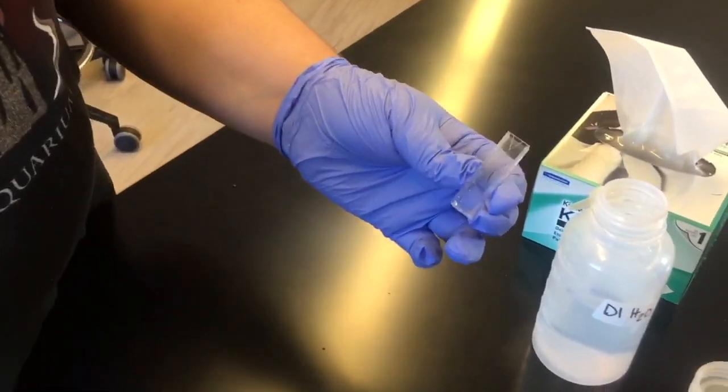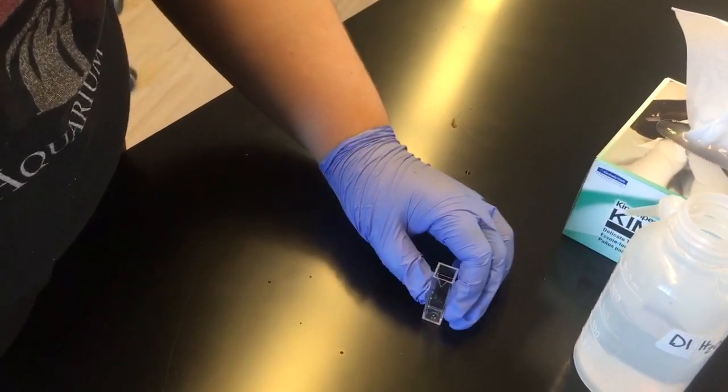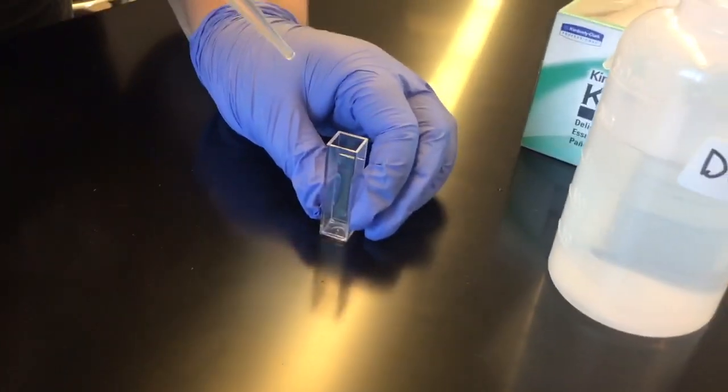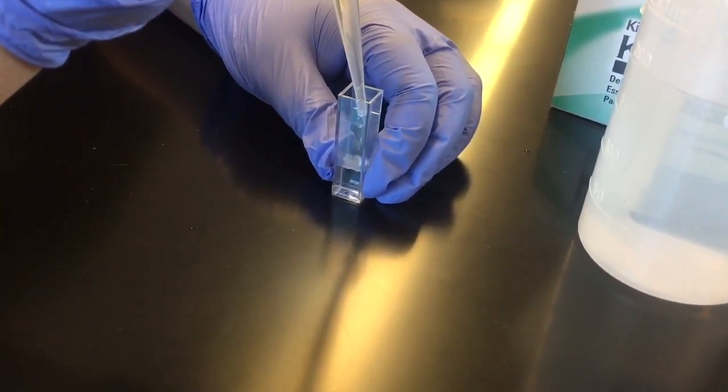This is your cuvette, and you want to make sure that it is clean. What you're going to do is put it down and take—I'm using DI water—you're going to fill up your solution all the way up to that line below the arrow.